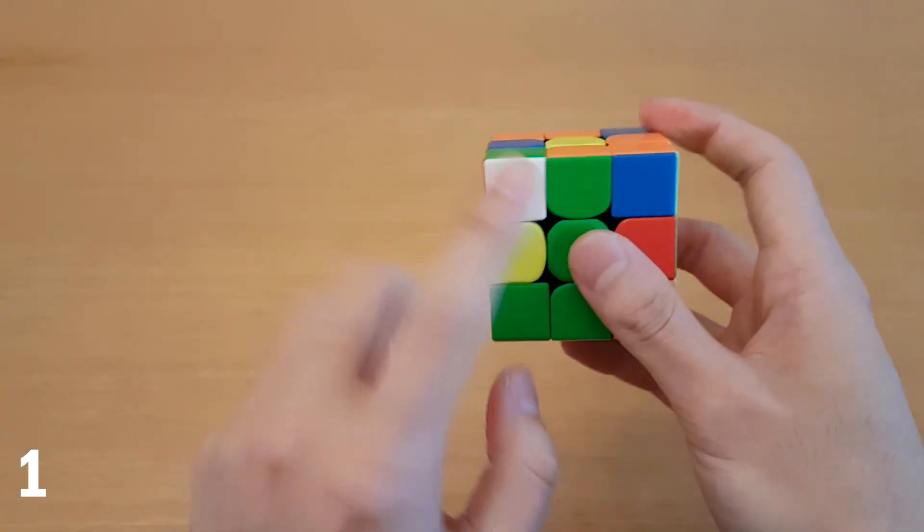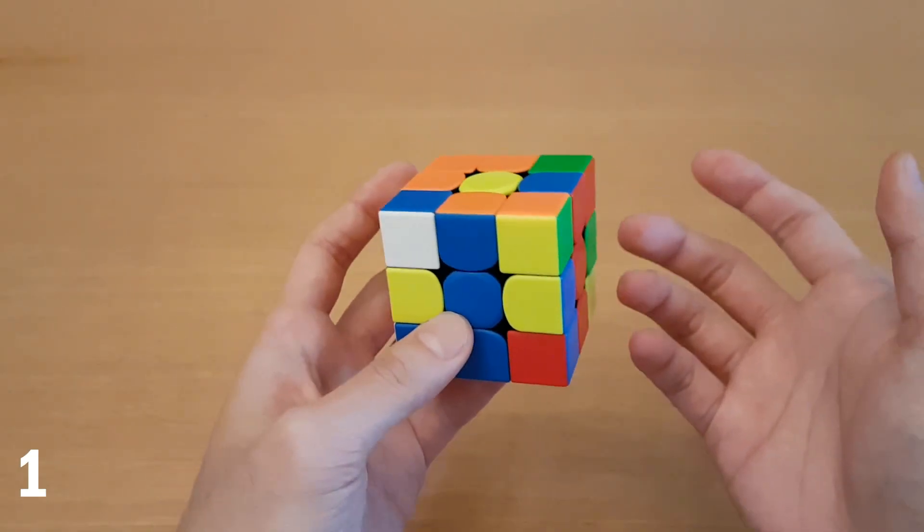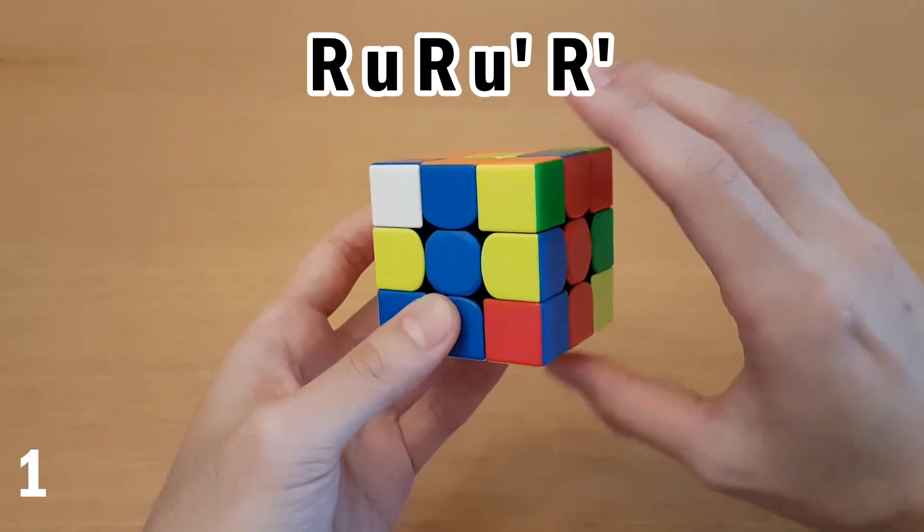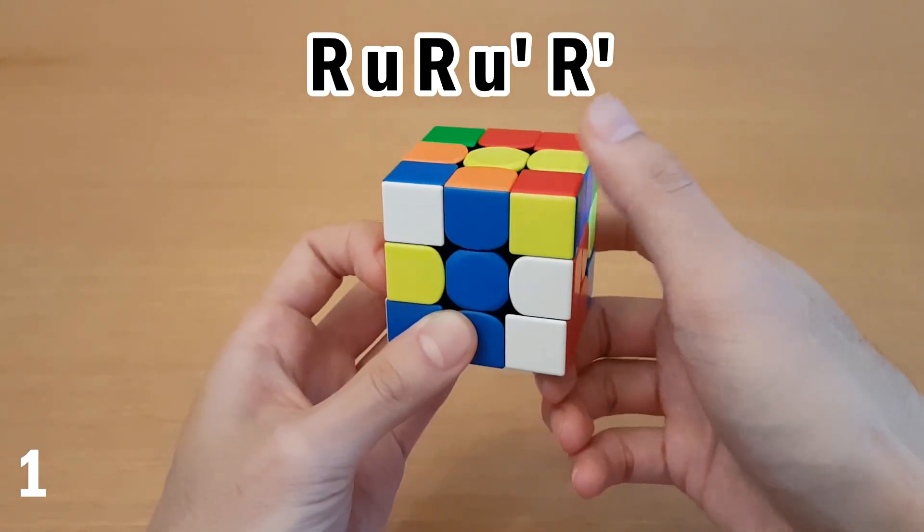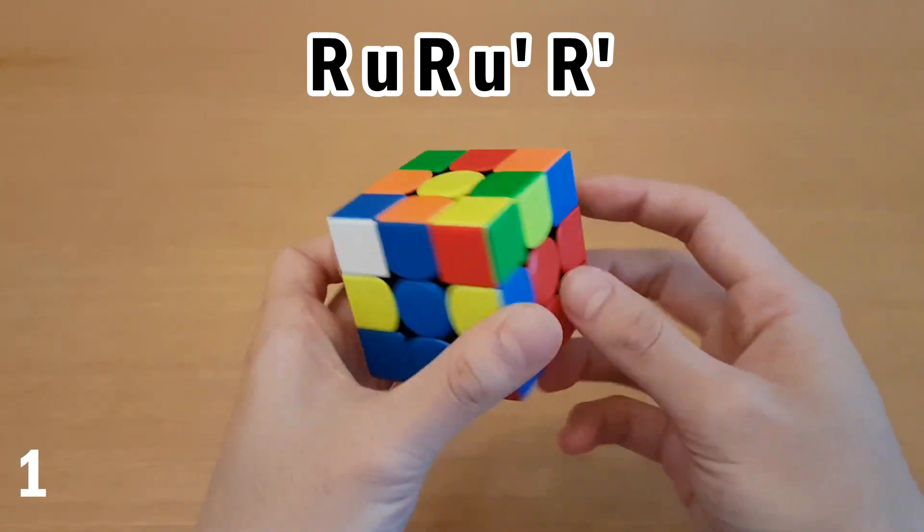So this corner is going into the slot with white facing the back, and the edge is over here misoriented. This is a hard case to recognize, so I most often use it if I predict it right after the cross. So it's done like this. And that saves a rotation and solves a backslot, so it's a really nice thing to do.